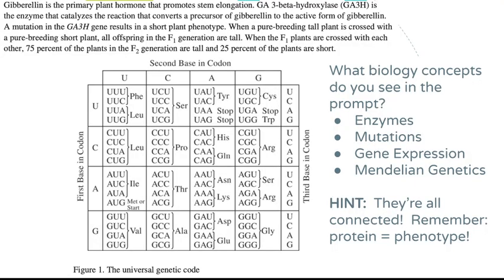This sample question is from the 2017 exam. There's no data to analyze here, just a codon chart provided for reference. Dive straight into identifying the biology concepts in the prompt. I see enzymes right away — GA3-beta-hydroxylase catalyzes the reaction converting a gibberellin precursor to the active form of gibberellin, which makes plants grow tall. It's a hormone.